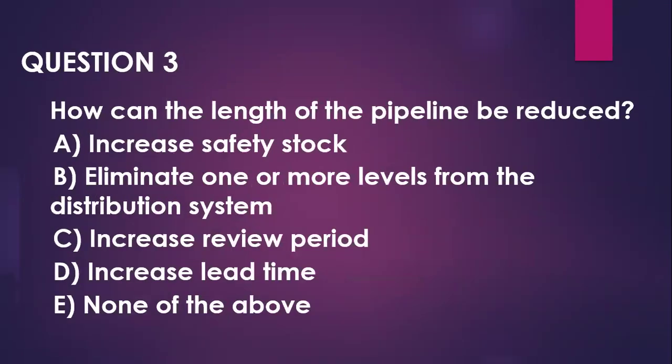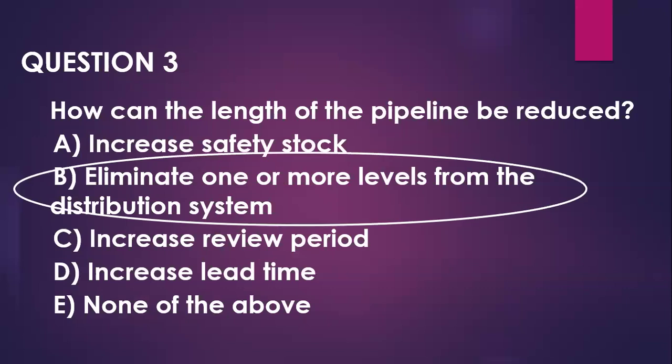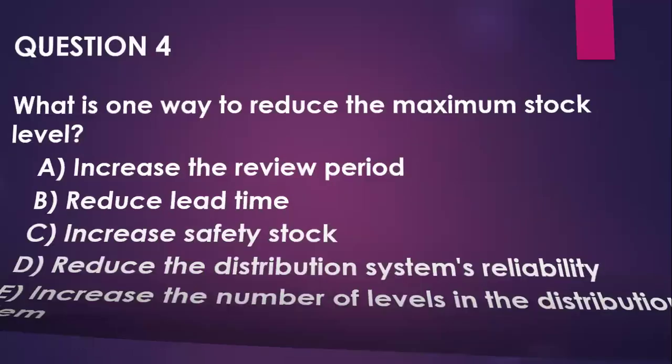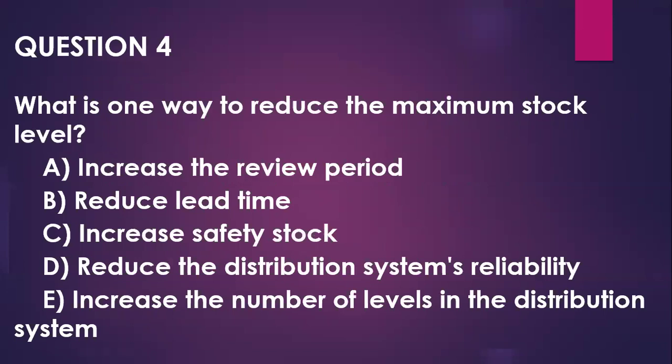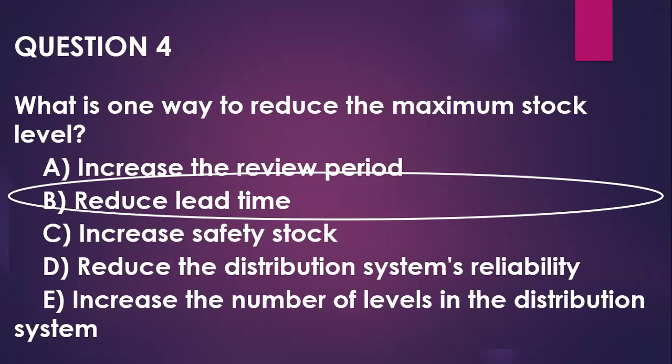Question number three: how can the length of the pipeline be reduced? You could do that by eliminating one or more levels from the distribution system. You could also reduce the maximum stock. Question number four: what is one way to reduce the maximum stock level, which is a way of reducing the pipeline? You can reduce the lead time.